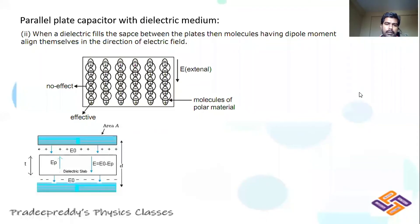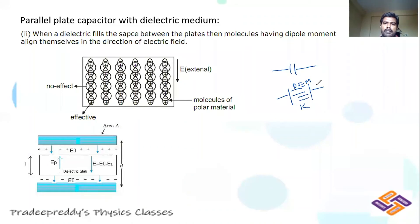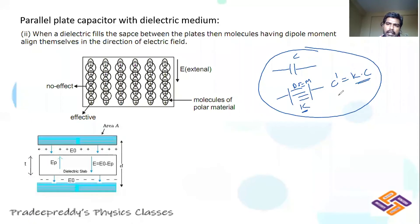We have already learned: when you take a capacitor and the plates are filled with a dielectric medium of dielectric constant k, the capacity of the capacitor increases. If original capacity is C and you replace the whole medium between two plates with a dielectric of constant k, then the new capacity C' = k × C.